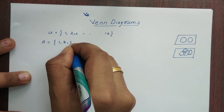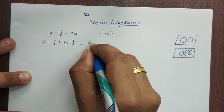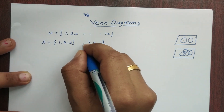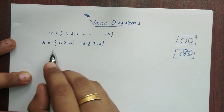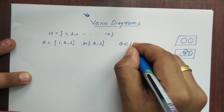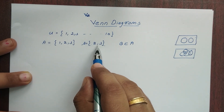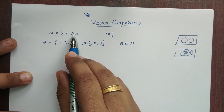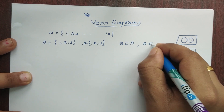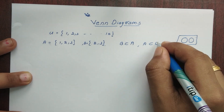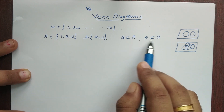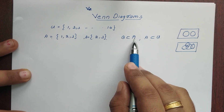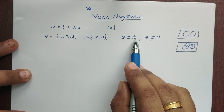Then, A is equal to {1, 2, 3}. We will see the subset of A here. It will compare two sets. Then A is equal to {2, 3}. We can write A is equal to U. Then A is equal to {2, 3} and we will represent these Venn Diagrams.